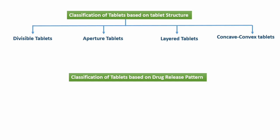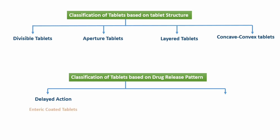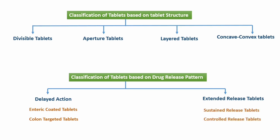One more classification system is based on the drug release pattern. The classes in this are delayed release tablets and extended release tablets. Delayed release tablets include enteric coated tablets and colon targeted tablets, while extended release tablets include sustained release tablets and controlled release tablets.